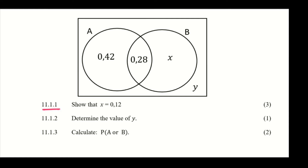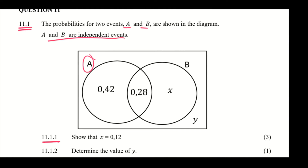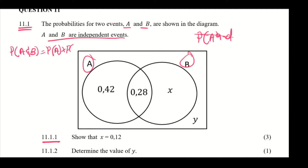For question 11.1.1, we are asked to show that X equals 0.12. Since events A and B are independent, we can use the independence formula: the probability of A and B equals the probability of A times the probability of B.